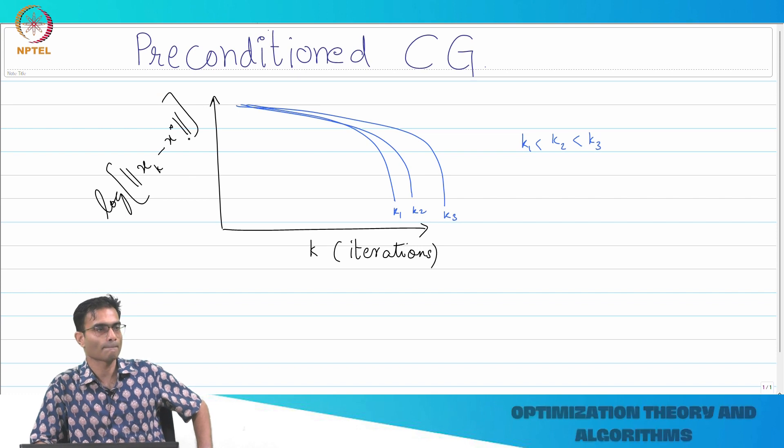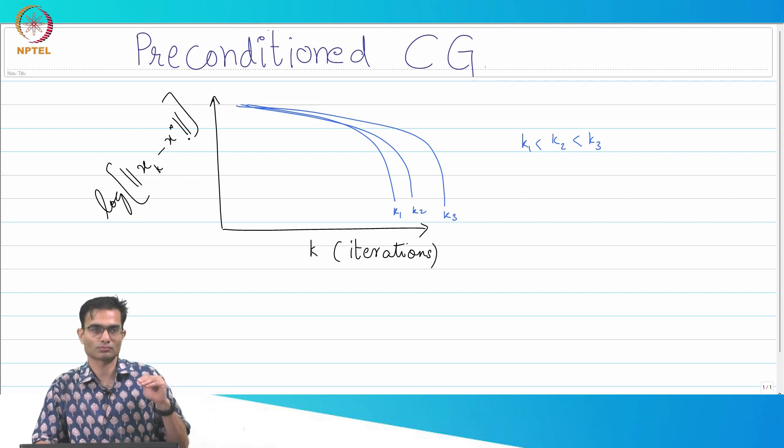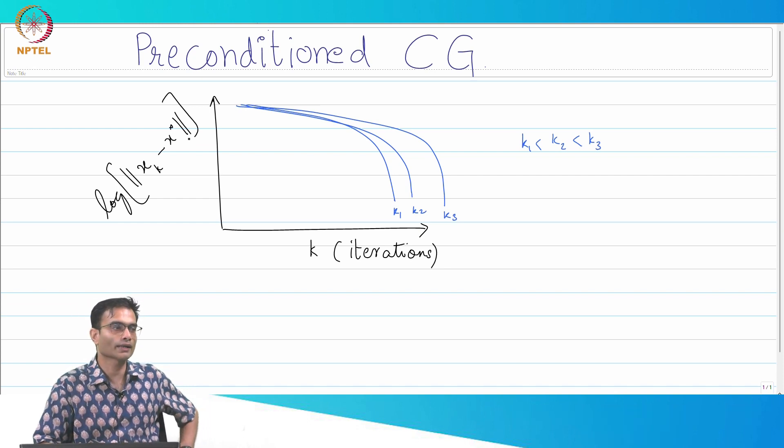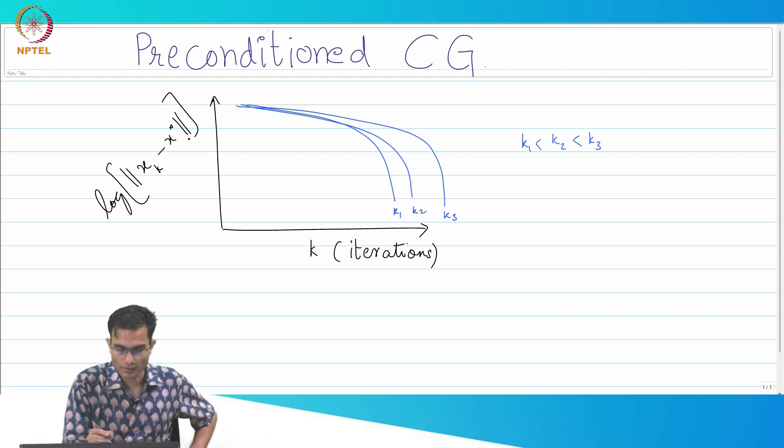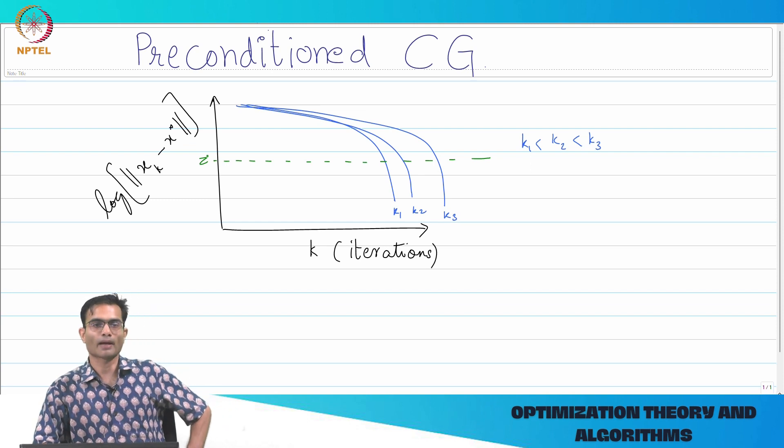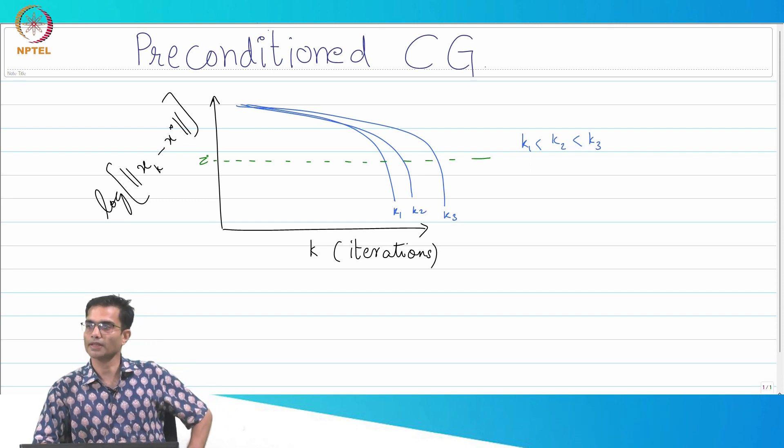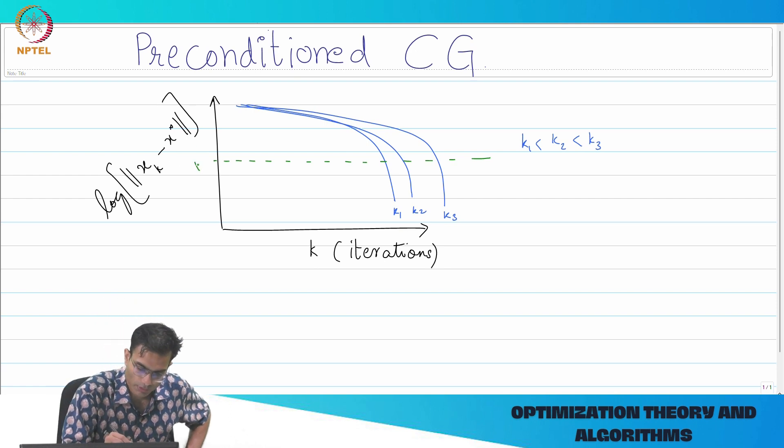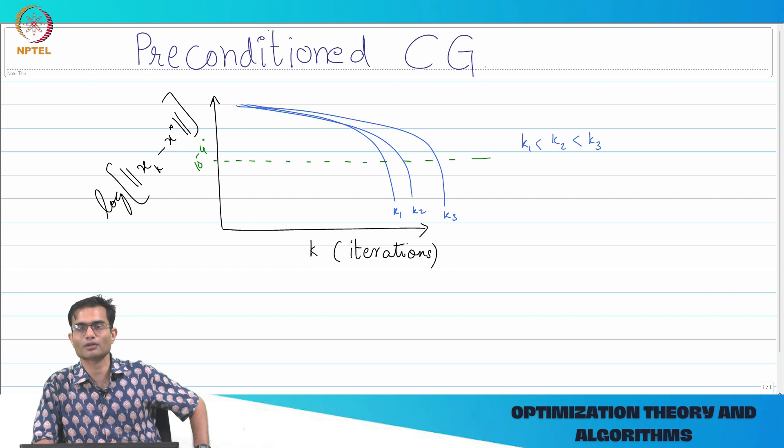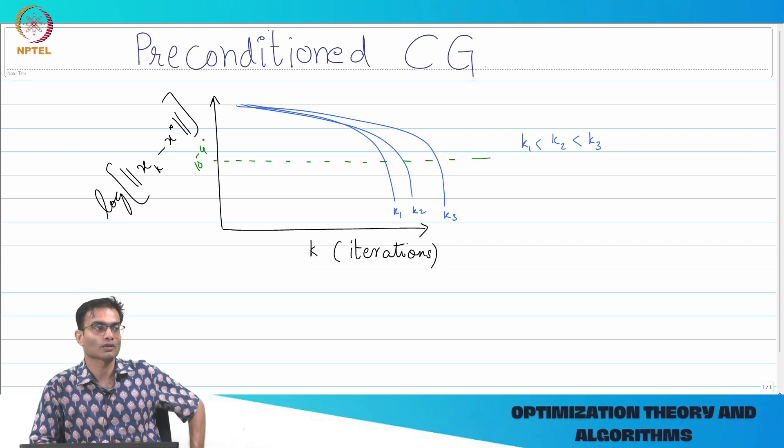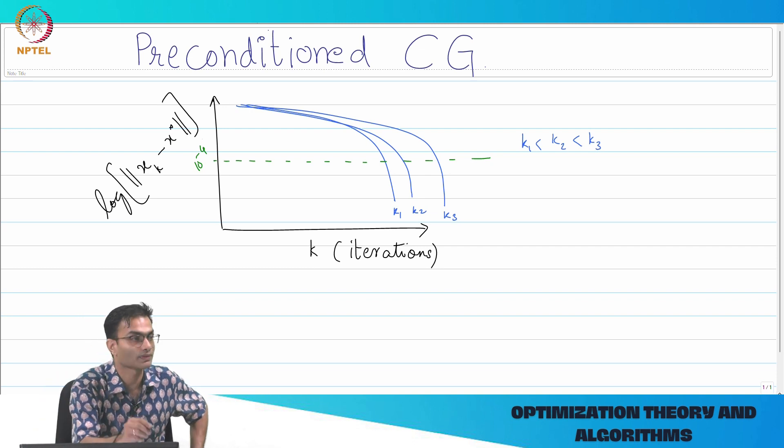What are a few observations that you make from here? For example, if I were interested in a certain threshold to stop my iterations or certain accuracy, that would be a horizontal line in the graph. Let's say that I want to get as long as I get an error below this threshold tau, I'm happy with my solution. I don't want 10 to the minus 16 error, 10 to the minus 4 is good enough for me.